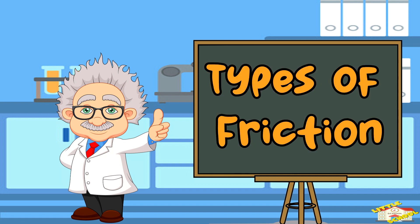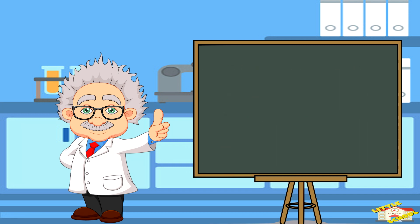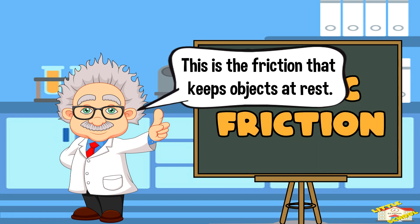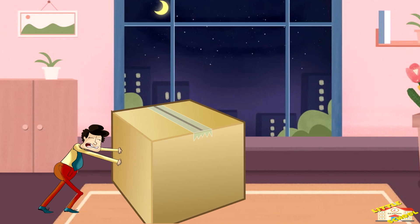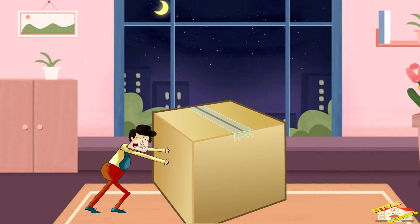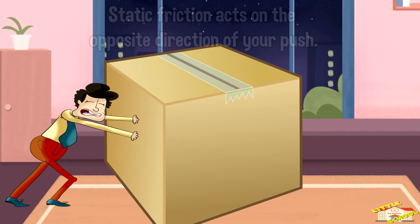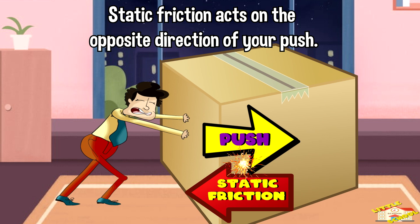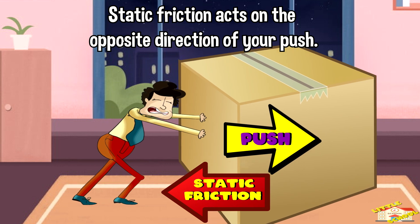Let's go over the types of friction. Let's begin with static friction. This is the friction that keeps objects at rest. Imagine trying to push a heavy box on the floor. At first, it doesn't move because static friction is acting in the opposite direction of your push.